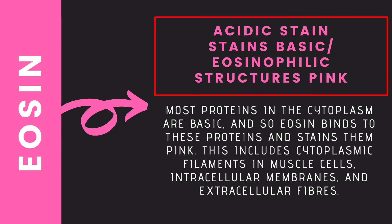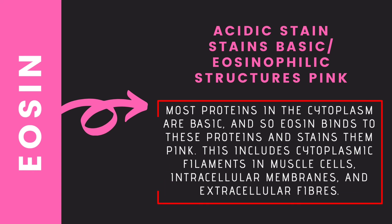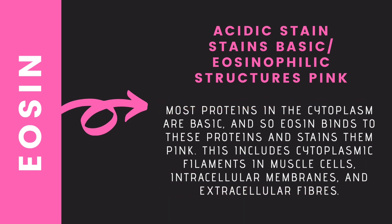Eosin is an acidic pink colored dye. So naturally, it will stain all the basic structures or eosinophilic structures which are present in the cells pink. Most of the proteins present in the cytoplasm are basic, so eosin will naturally bind to the protein present in the cytoplasm and stain it pink. Likewise, all other proteinaceous substances like filaments in the muscle cell, membranes, and extracellular fibers — all of these stain with eosin dye. Remember the structures which stain with hematoxylin and the structures which stain with eosin.